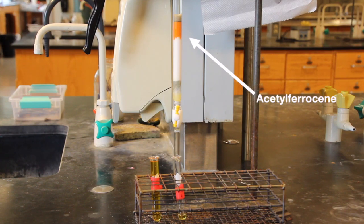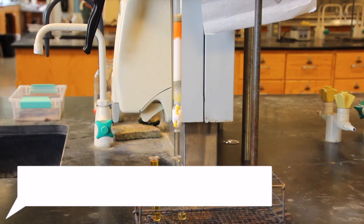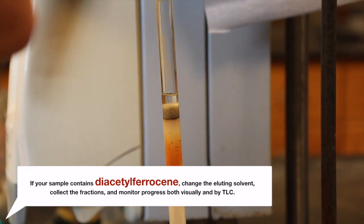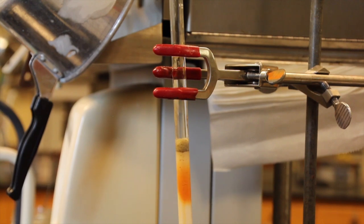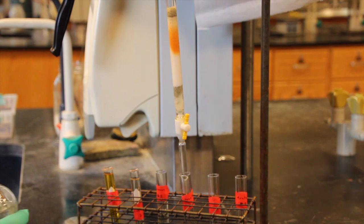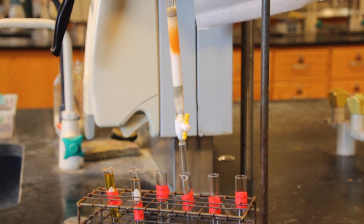If your unknown sample contains it, acetyl ferrocene should still be on the column as it moves through the column much more slowly. Now is the time to change solvents to speed up the recovery of the second compound. When changing over solvents, use a pasture pipette to withdraw extra amounts of the first solvent from the alumina in the column. Then, add the second solvent to a height of about 10 centimeters above the alumina. Open the stopcock and start collecting 4 milliliter samples as before, monitoring these samples by TLC.